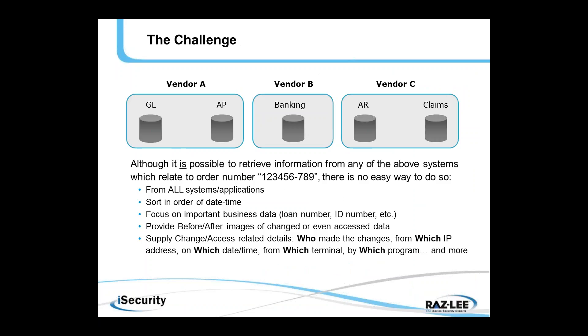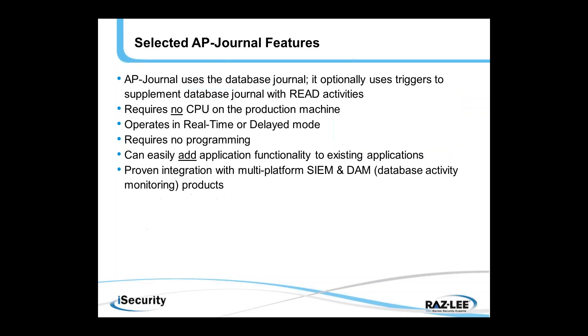The challenge when we talk about application security is as follows. Although it is possible to retrieve information from any of the above systems relating to a certain order number, there really is no easy way to do so from all systems or applications at one time — to sort by date and time across all these applications, to focus on an important business item which perhaps appears in two, three, four, or all of these different applications, to provide before and after images of changed or accessed data, and to supply details related to the change or access: who made the change, from which IP address, on which date or time, from which terminal, by which program, etc.